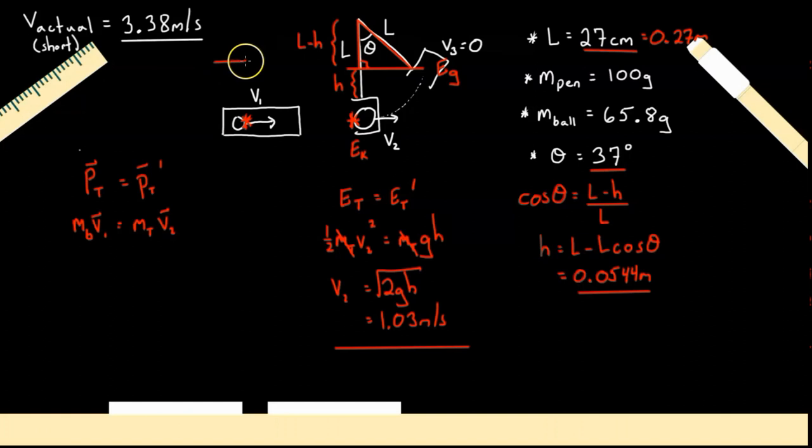And we'll just call that forward direction our positive direction. So now we can figure out what that velocity of the ball was initially when launched if we do total mass times v2 divided by v1. And if we plug everything in there, we get the velocity of the ball to be 2.60 meters per second.